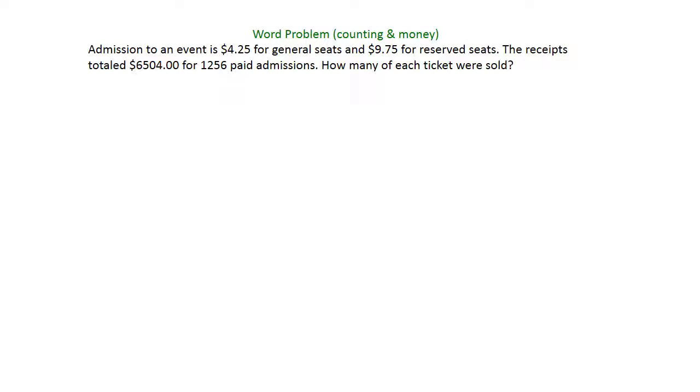In this example, we're going to use a system of equations to find two different ticket types that were sold at an event. At this particular event, we had general seats and reserved seats with different prices for each kind. We have total receipts and the total paid admissions, or the total number of tickets that were sold.